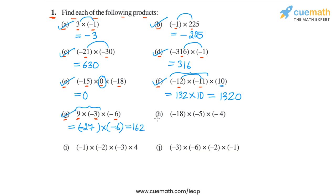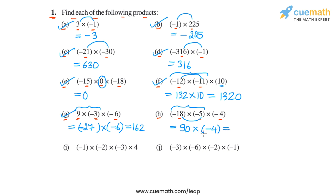Then in part H, we have to calculate minus 18 into minus 5 into minus 4. We have three terms. Let's first calculate minus 18 into minus 5. The magnitude will be 18 into 5, or 90, and the sign will be positive, because both integers are negative. So we get 90 into minus 4. The magnitude will be 90 into 4, or 360, and the sign will be negative. So we will get minus 360.